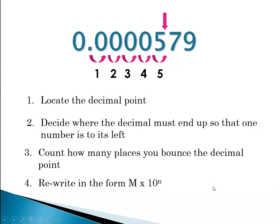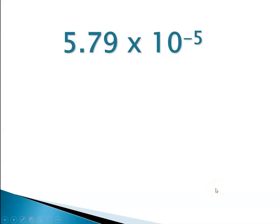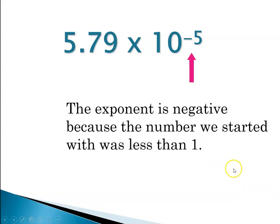So now we can rewrite the number in the form m times 10 to the n. So that would be 5.79 times 10 to the minus 5. And notice that the exponent is a negative number because the number we started with was less than 1.